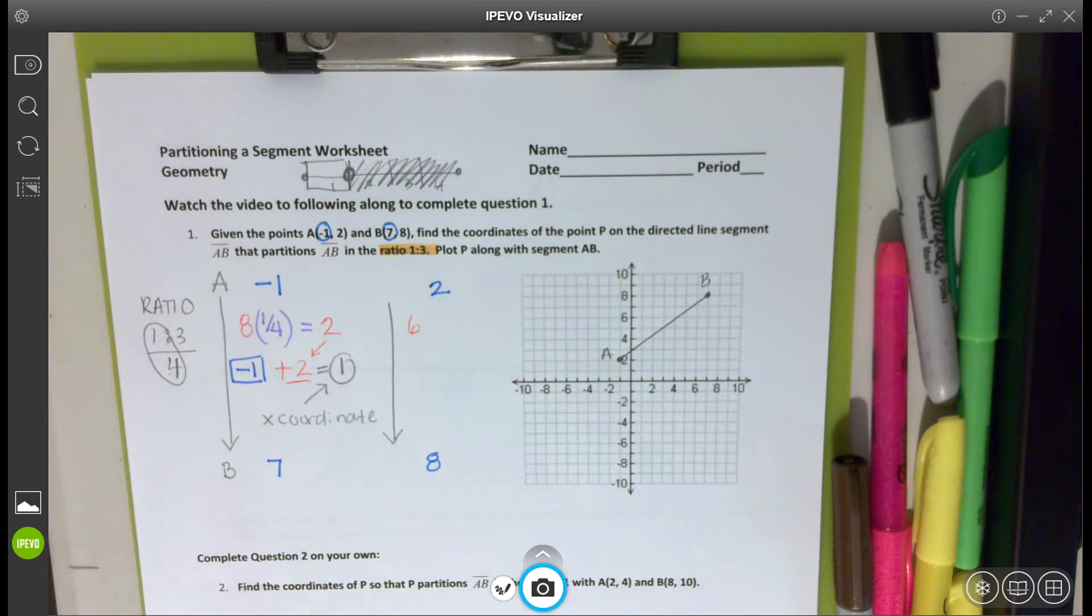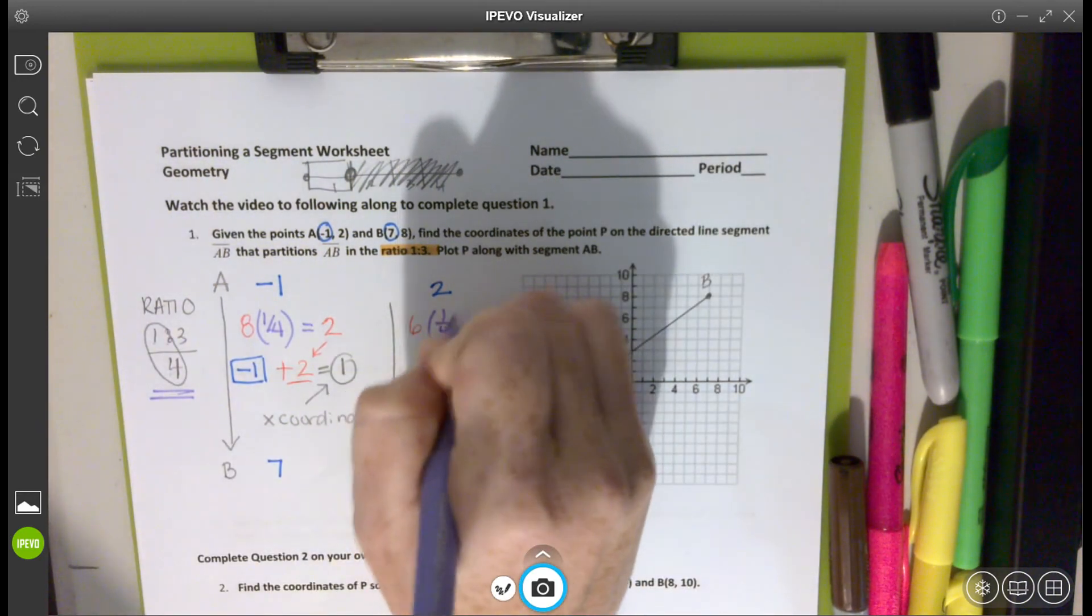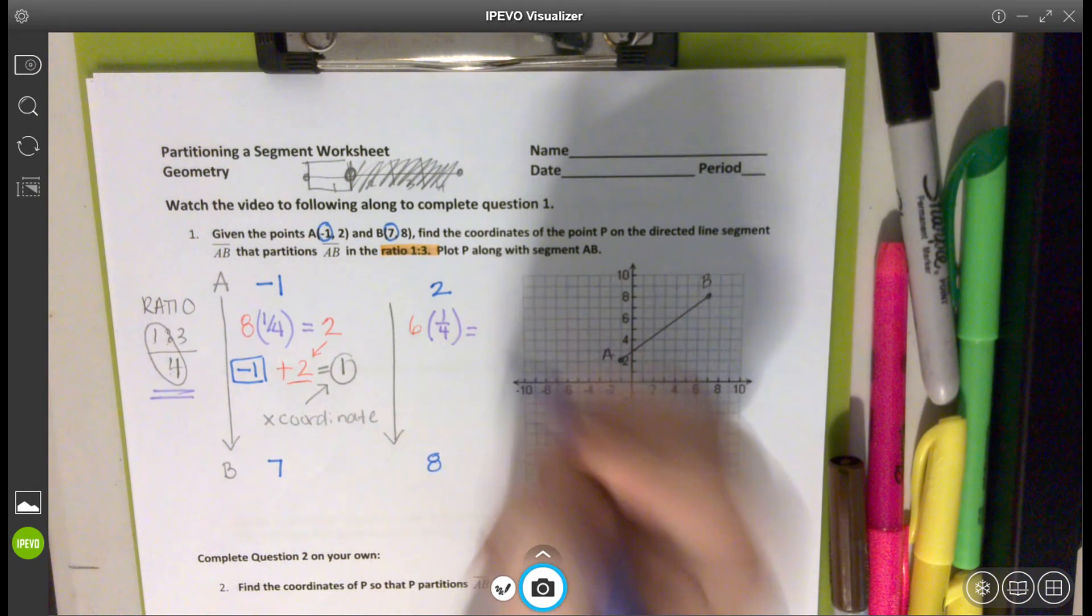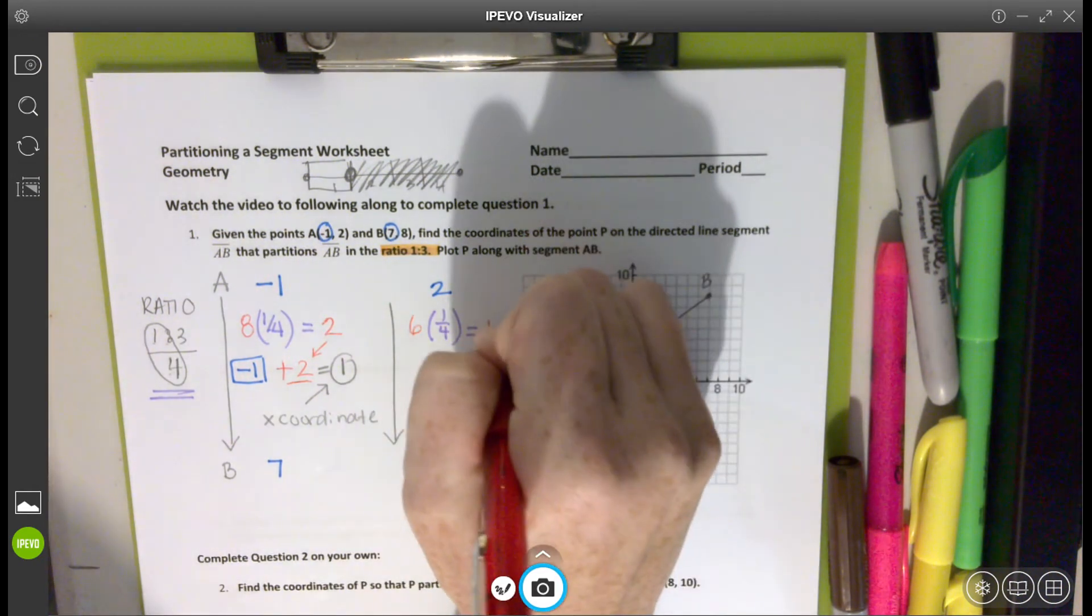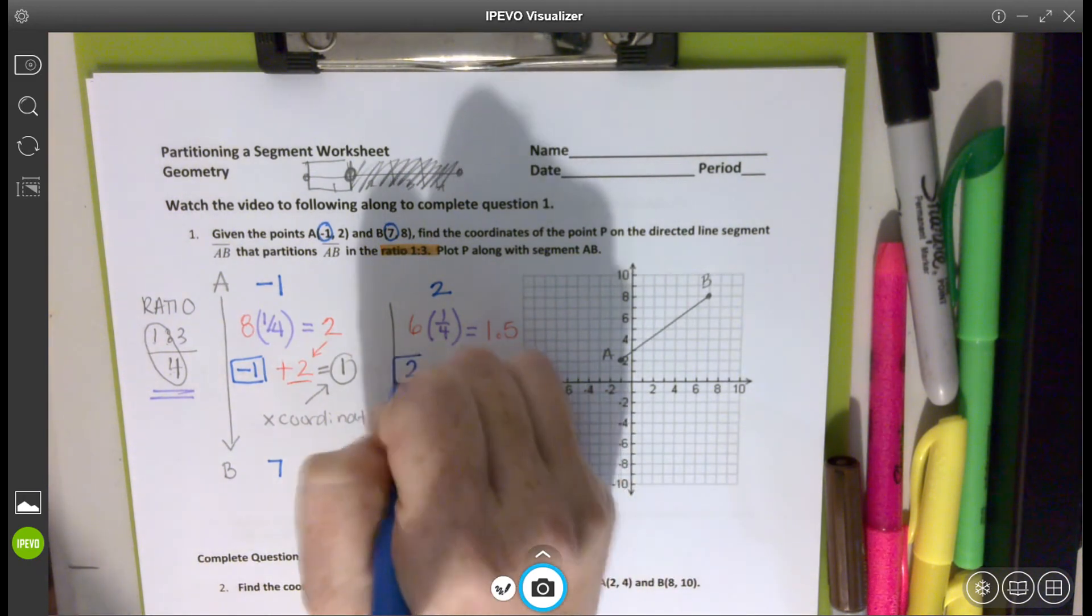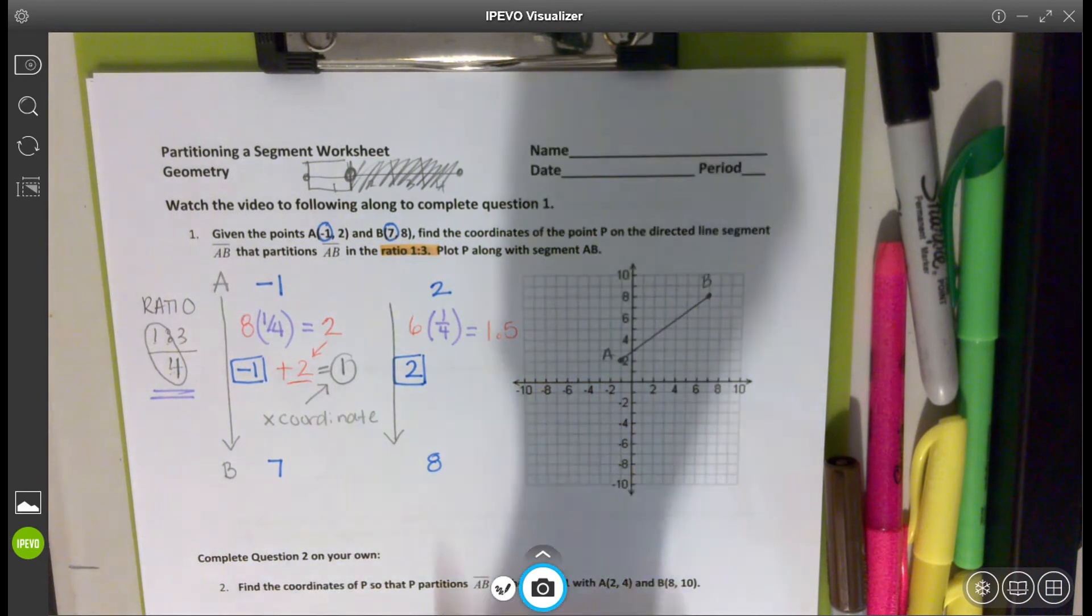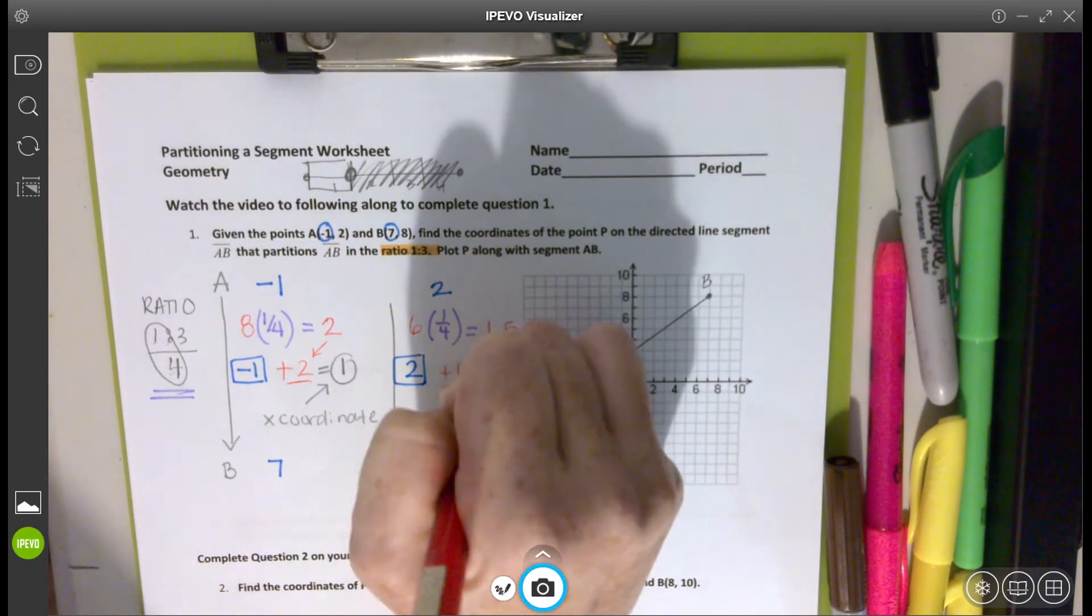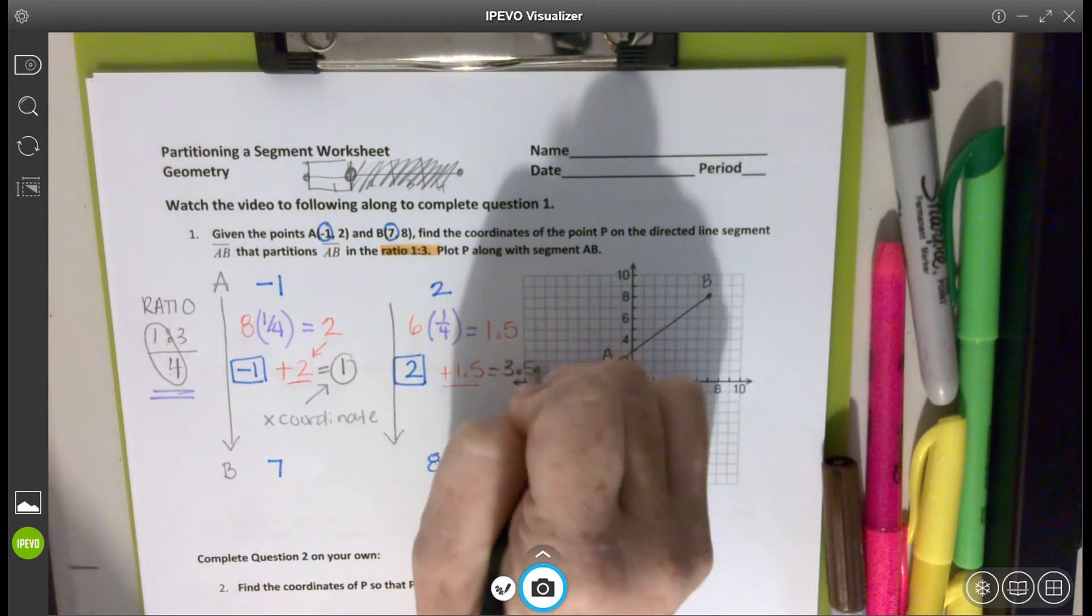We're going to figure out what a fourth of that way is, like we did in the previous problem, using that same ratio. And when I multiply, I will get 1.5. So 1.5 is what we're going to use to add from our starting point. Our starting point was two for our Y value, and we are going to add 1.5. And when we do, we get 3.5.